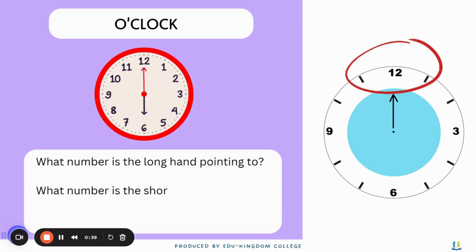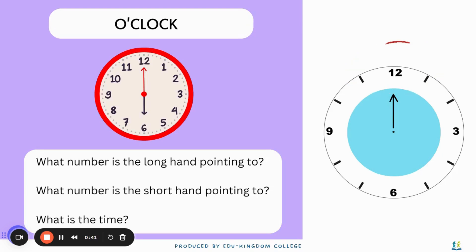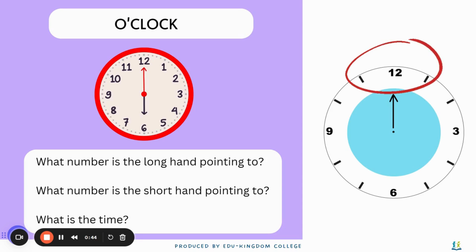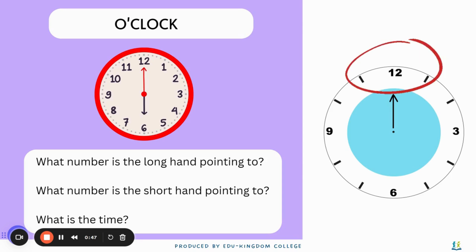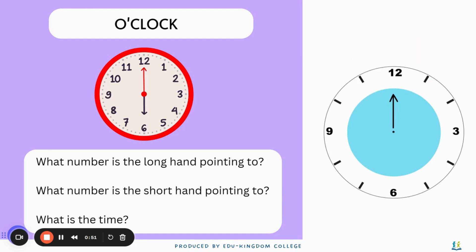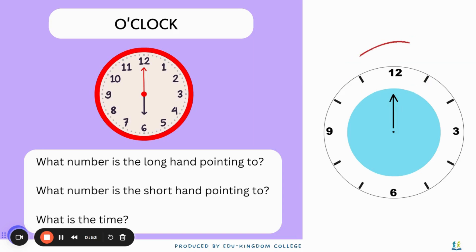When we're trying to figure out o'clock, we need to consider what number the long hand is pointing to and what number the short hand is pointing to, then figuring out what the time is. It can only be o'clock when the minute hand is pointing to the number 12.